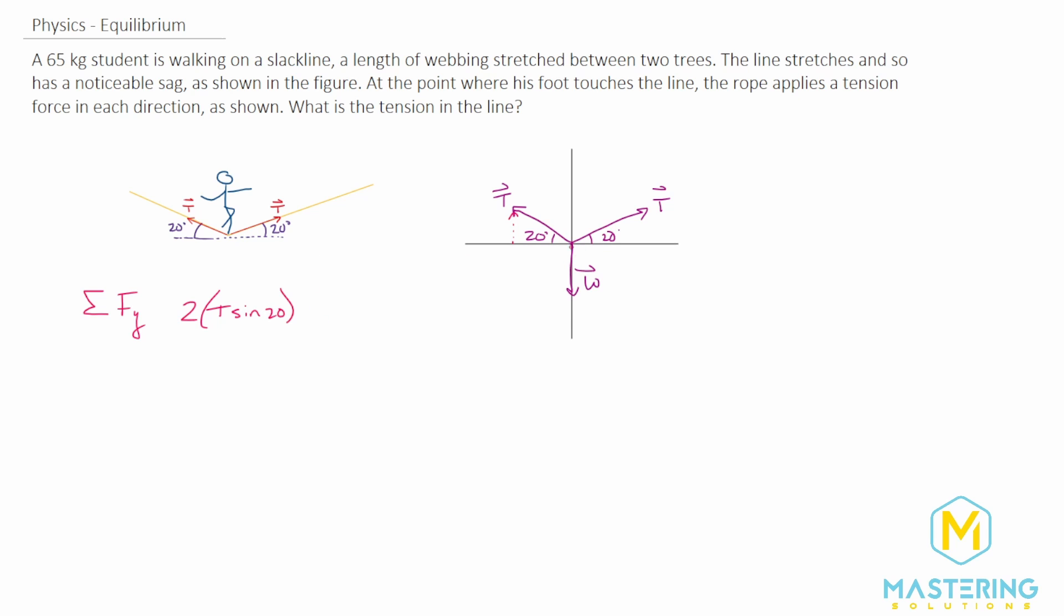We'll subtract the weight from that, because the tension components go in the positive y direction and weight goes in the negative y direction. It's in static equilibrium, so instead of ma, the acceleration is zero, so this equals zero.